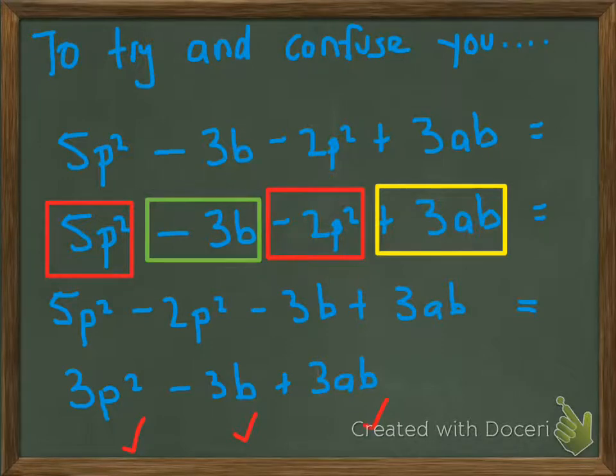Sometimes I try and confuse you by putting in squared numbers and things like that. Don't get confused. Just remember apples, pears, bananas, carrots, kiwifruit, whatever—keep them all separate. Again, draw the boxes around and look for all the ones that are the same or common. Here we've got 5p squared minus 2p squared, 3b by itself, and 3ab by itself. Then just rewrite your equation. 5p squared minus 2p squared equals 3p squared, and then minus 3b plus 3ab. Just leave it as is, and that is the answer.